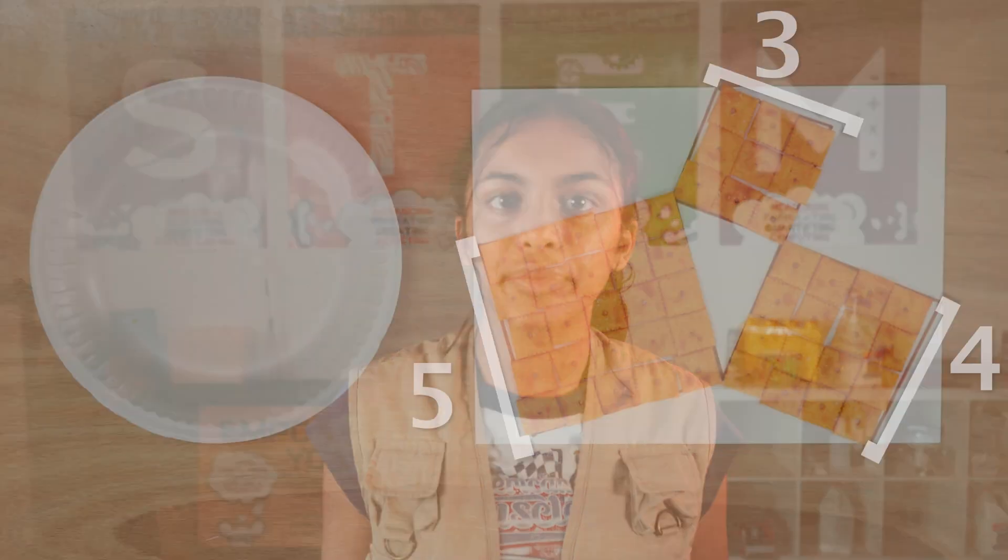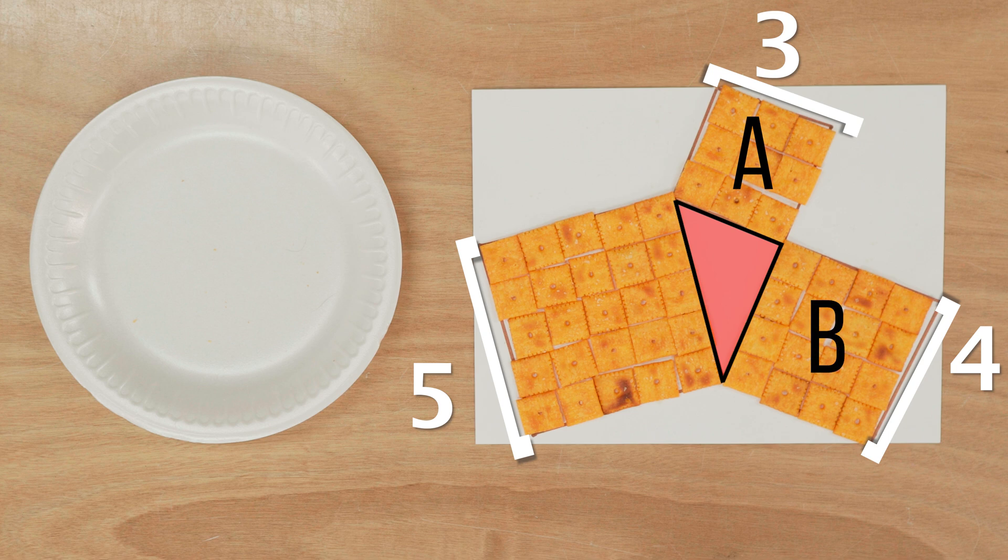Using these squares, let's create a right angle triangle. The side lengths of the 3 and 4 squares will form the right angle, which means that A and B are represented by these sides. The 5 square will be our hypotenuse represented by C.